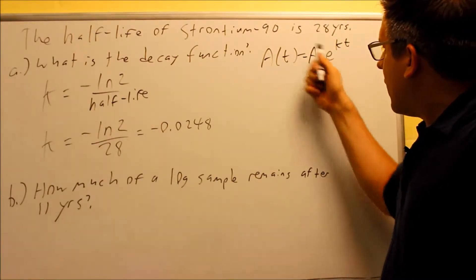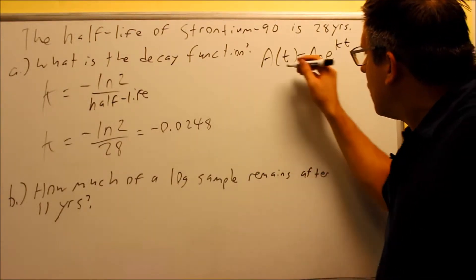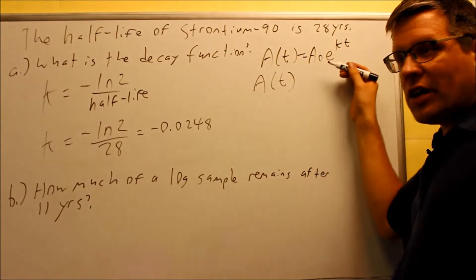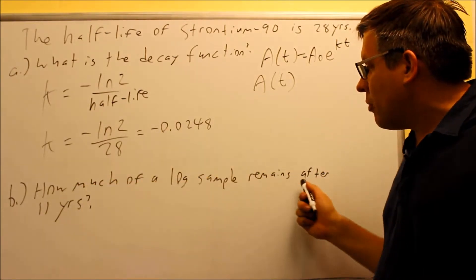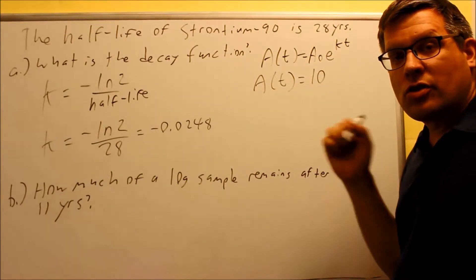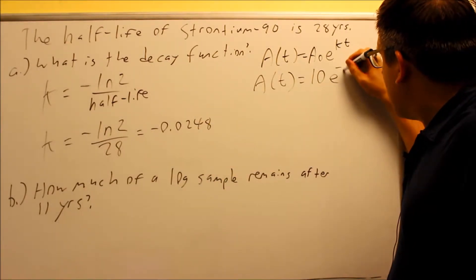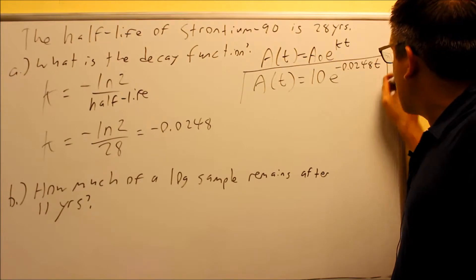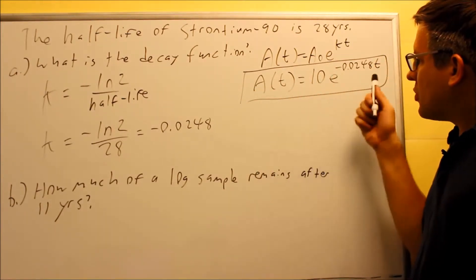We need to know that now in order to do this problem. So we have to put it back into the formula and come up with the exact decay function that goes along with the information provided. Now, the A(0), that's the amount you're originally starting with. In order to find that, we actually have to look at part b. Part b says how much of a 10-gram sample remains after 11 years. So the 10 grams right here, that's what we put in for the A(0), that's the original amount we're starting with. You have e and then the k we just found, negative 0.0248, and that's going to be t. So this right here is the answer to part a, that's your decay function.